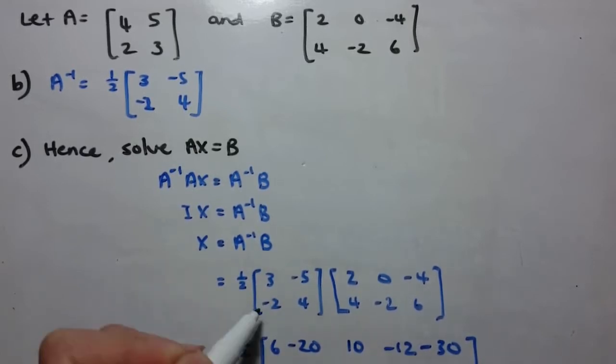And then we go on to the second row, so grabbing this row now, second row first column, negative 2 times 2 is negative 4, plus 4 times 4 is 16.